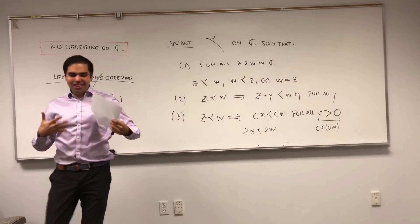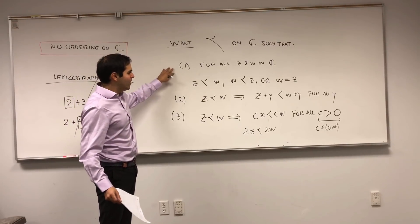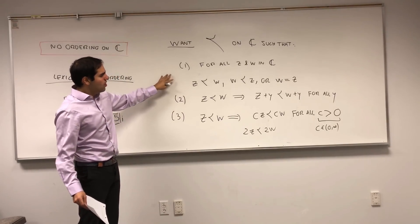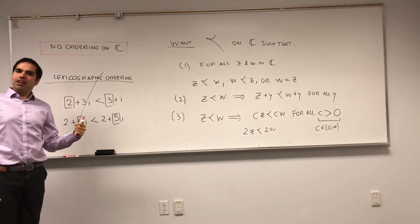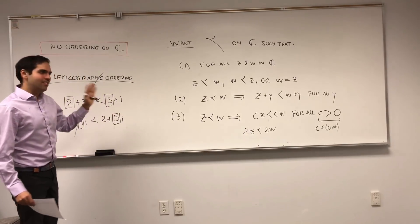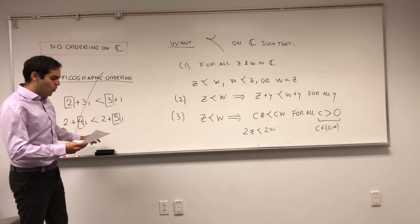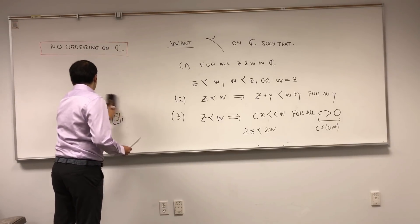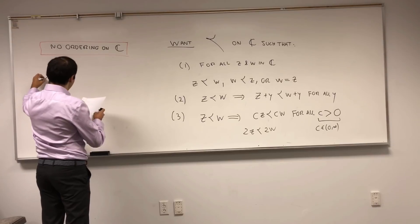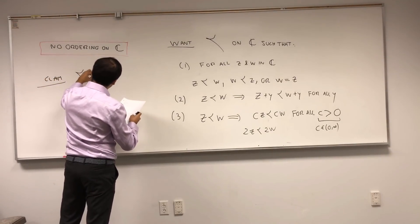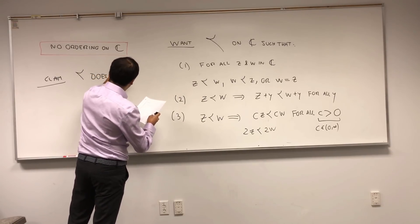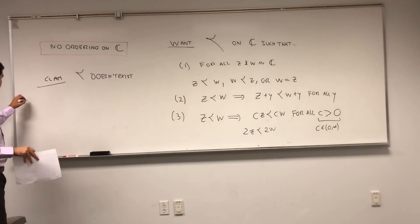Hopefully this convinces you that if we have a nice ordering, those three things should hold. But what I want to show you is there is no ordering with those three properties — it is basically impossible to order the complex numbers. So the claim is: this beautiful symbol doesn't exist. And here is why. Proof.